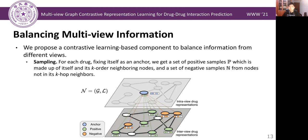So, it is necessary to balance multi-view information in drug embeddings and make them distinguishable. Here, we propose a contrastive learning-based component to achieve our goals. In the sampling stage, we fix each drug as an anchor. Then, get a set of positives, which is made up of itself and its k-order neighboring nodes.